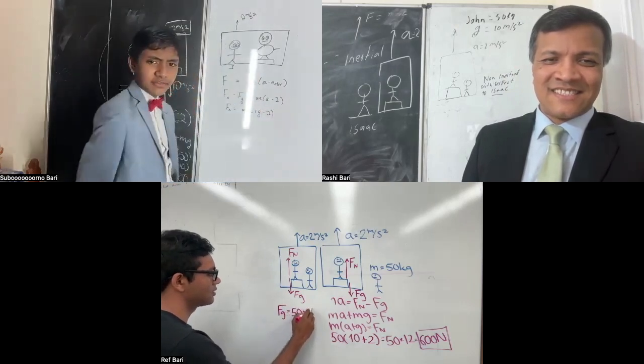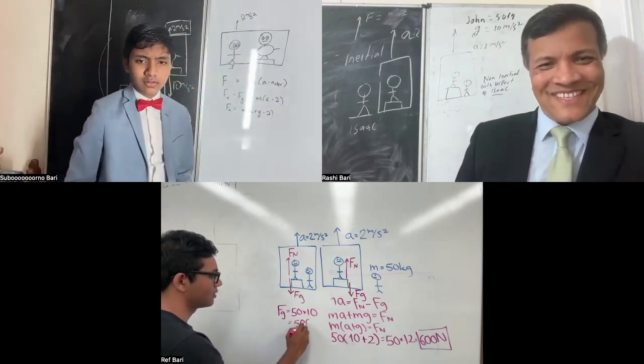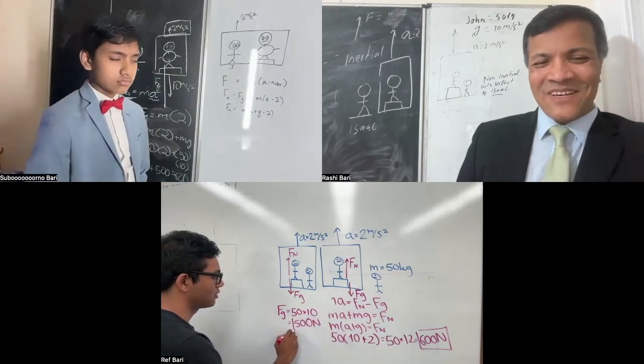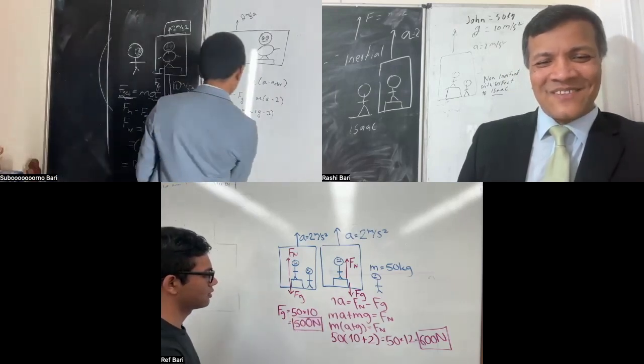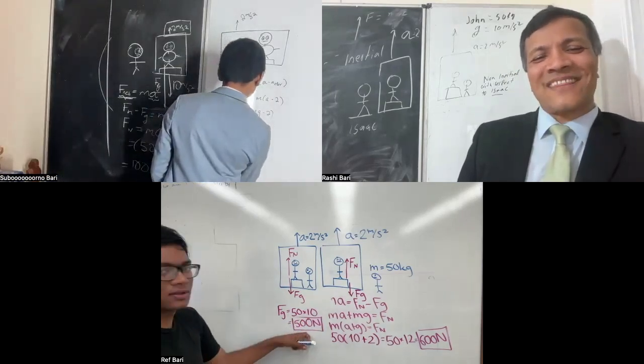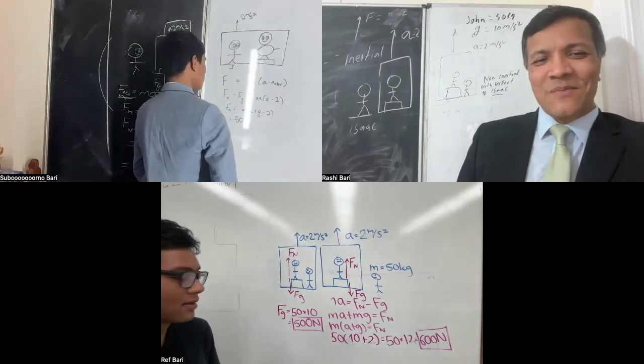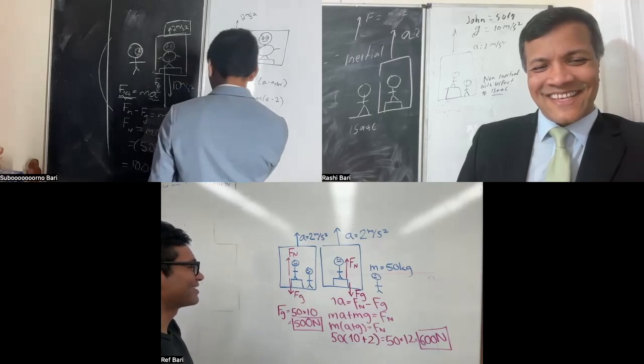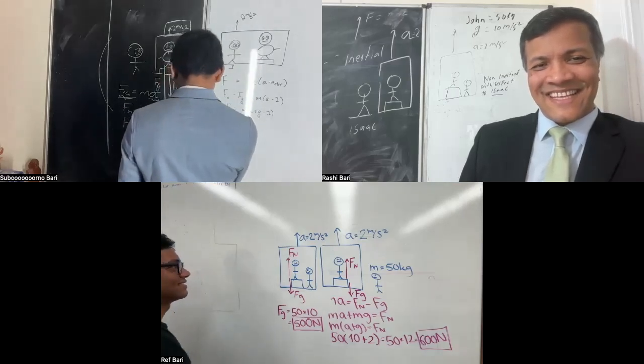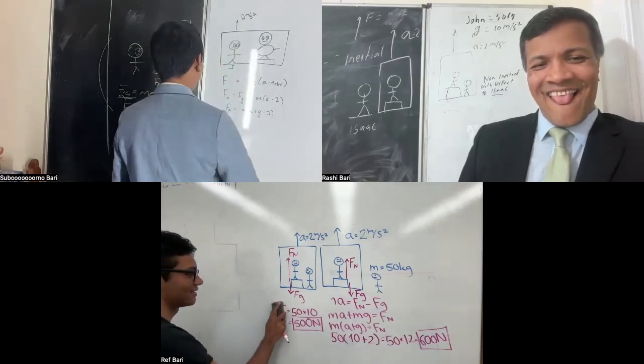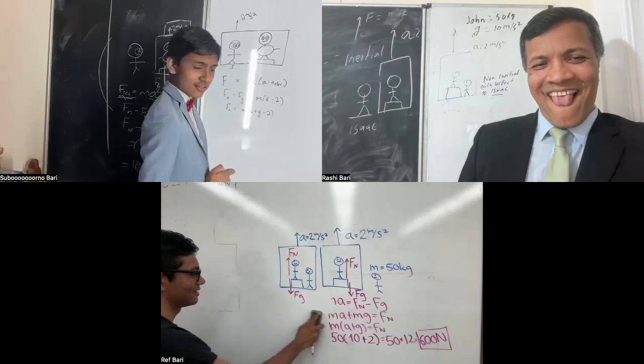Write down the value. Whatever he see, can you write down the value? I want to see the math. I want to see the math. I just don't. Isaac wrote the math. Ref, you did not write any math. Ref does math, not math.